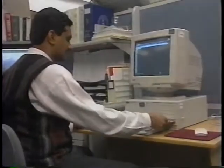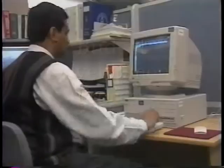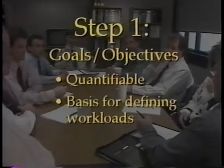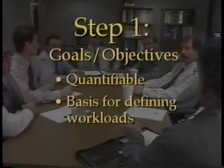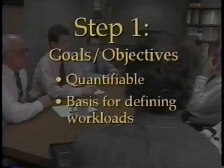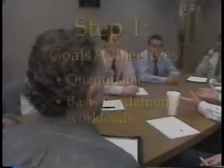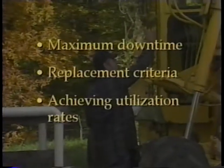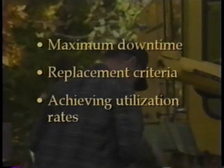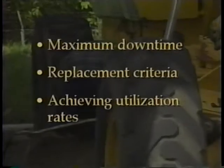The budget system should incorporate a standard development process for each program and include the following five steps. Step one: establish goals and objectives. To the extent possible, the goals and objectives should be quantifiable and form a basis for defining the workload and for measuring performance. Some specific objectives might include maximum allowable downtime, replacing all vehicles meeting replacement criteria, and achieving average utilization rates by class.